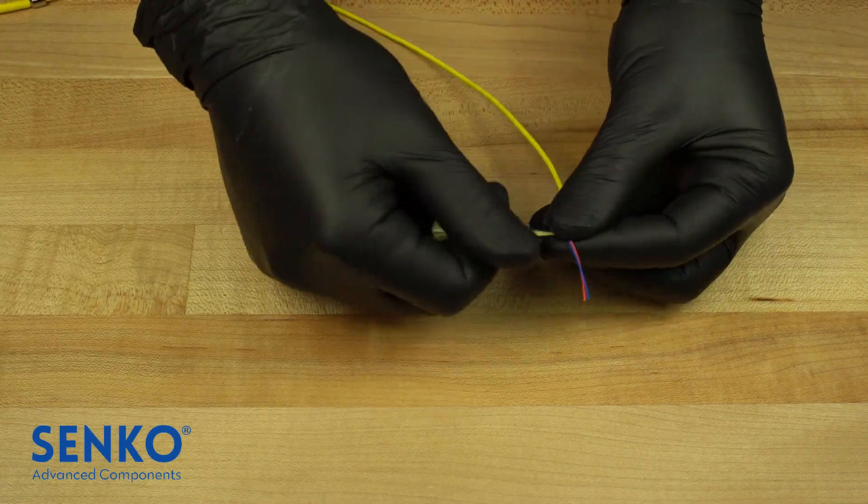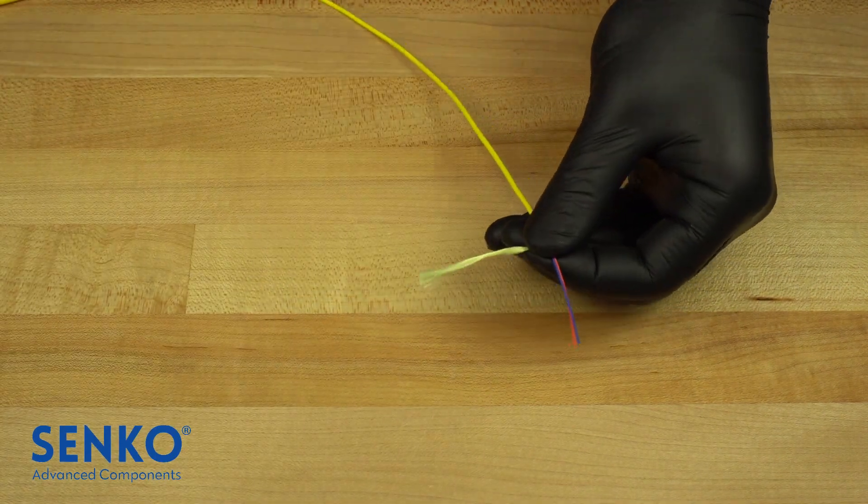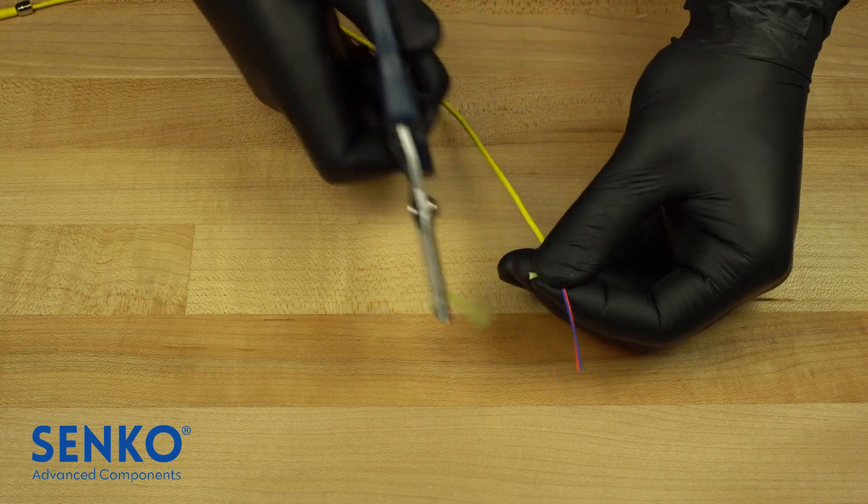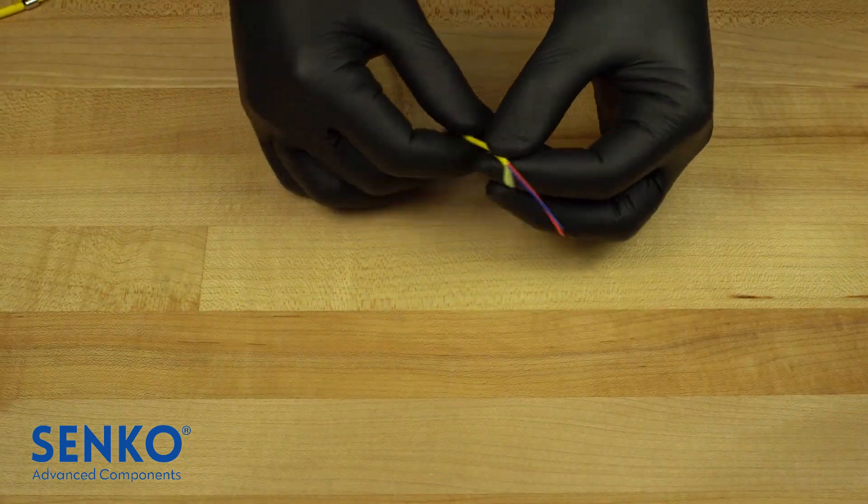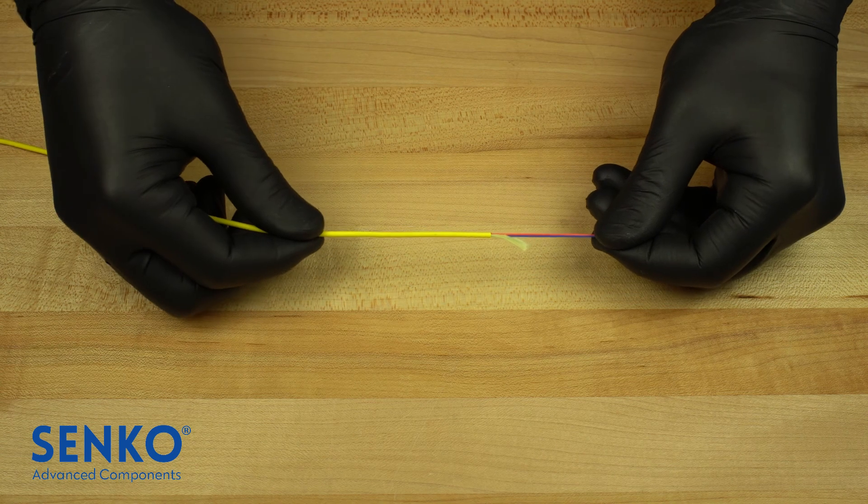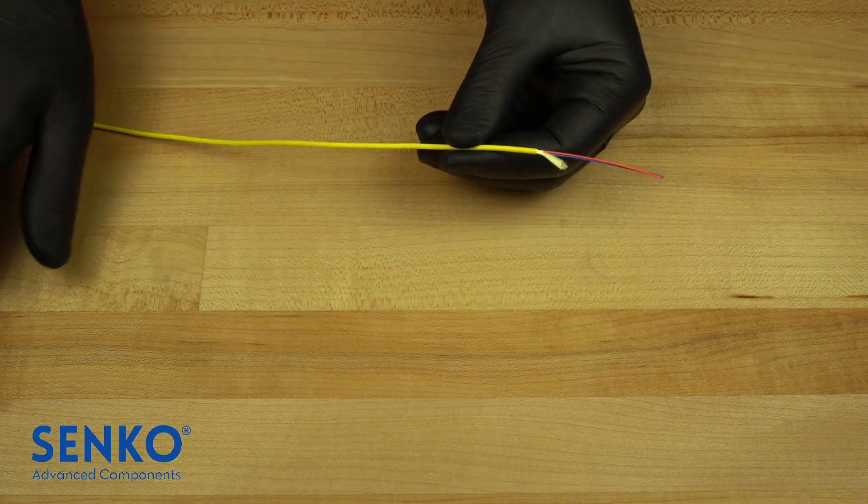Cut the excess aramid yarn to about 7mm. You can always leave more and trim it later on. At this point, it is recommended to give the fibers and aramid yarn a gentle tug as shown to make sure they are fully relaxed out of the cable jacket.